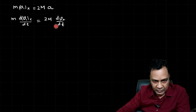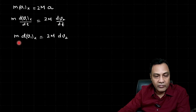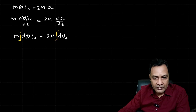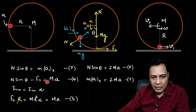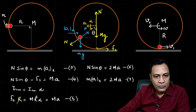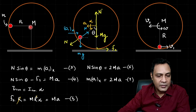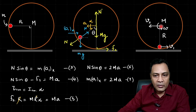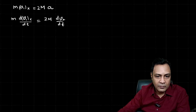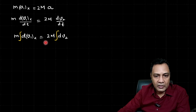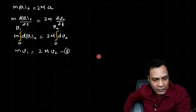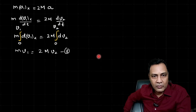Integrating both sides: at the initial moment both puck and cylinder are at rest, so initial velocities are zero. At the final moment the x-component of the puck's velocity is V1 and the center of mass velocity is V2. So integrating from 0 to V1 and 0 to V2 respectively: m·V1 = 2M·V2. This is equation 3 — a third equation relating V1 and V2.